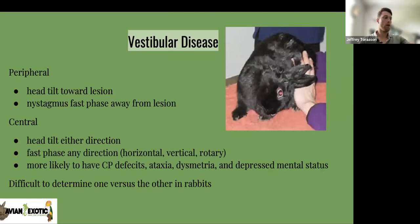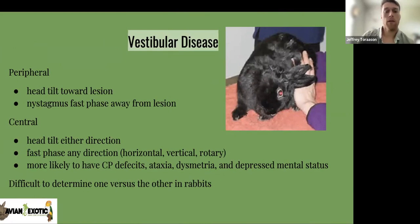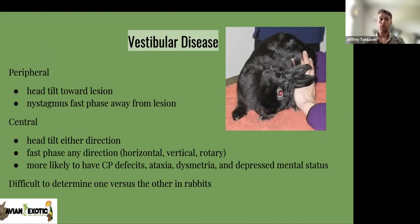This rabbit has a significant head tilt, which brings us into vestibular disease. We can characterize that into two aspects: peripheral or central. For peripheral, the head tilt goes toward the lesion — so in this rabbit, if the head is tilting left, the lesion is on the left side. Nystagmus fast phase is away from the lesion. If you see horizontal nystagmus where the fast phase is going away, the lesion is away from that fast phase.